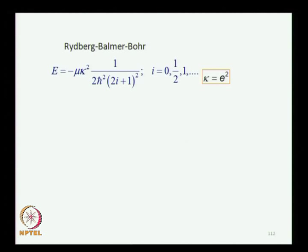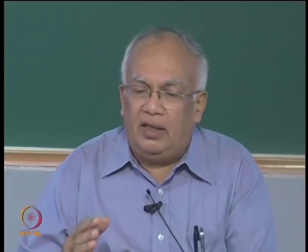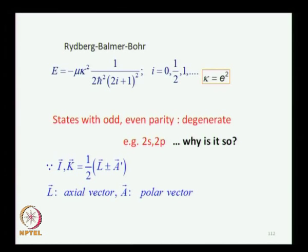For the Rydberg-Balmer formula, we put κ = e². Notice that 2s and 2p are degenerate, which is rather surprising because these wave functions have opposite parity — one is even, the other is odd, with parity given by the L quantum number. Usually you do not have degeneracy between functions of opposite parity. We now understand this easily because we are dealing with a mix of L and A: one is a polar vector, the other is an axial vector, and that is why parity is not a good quantum number in this case.